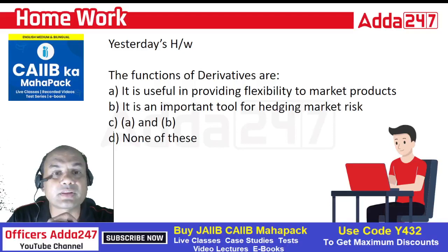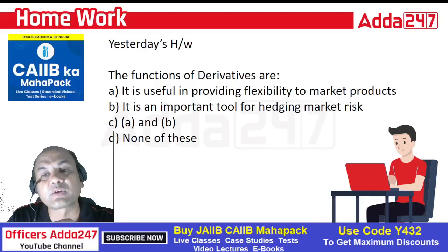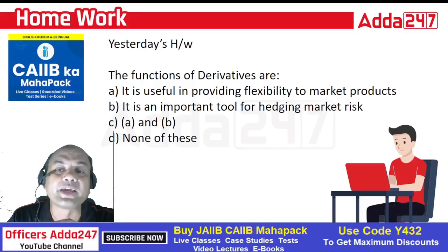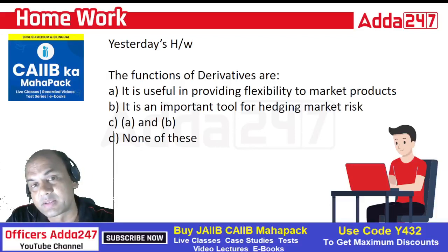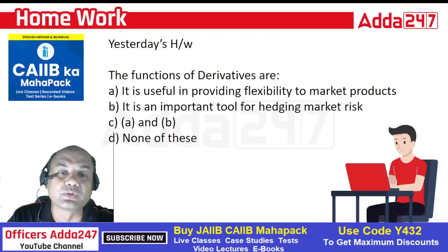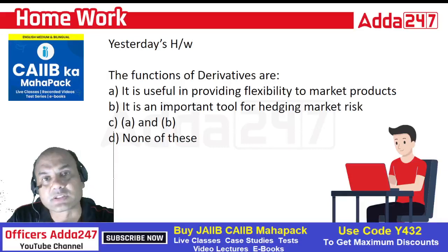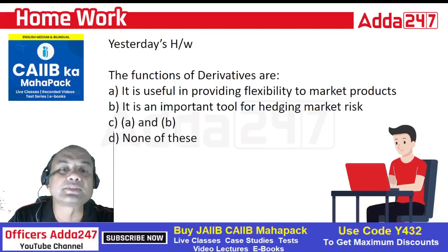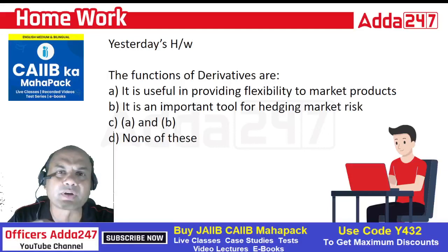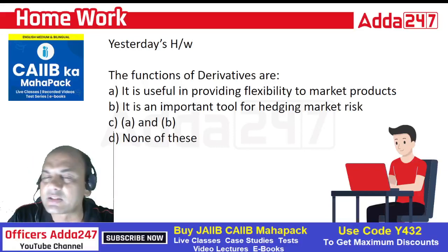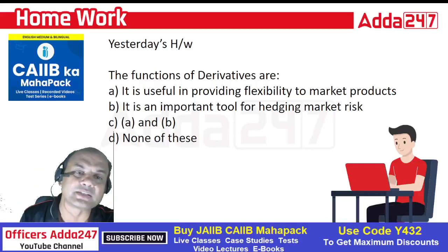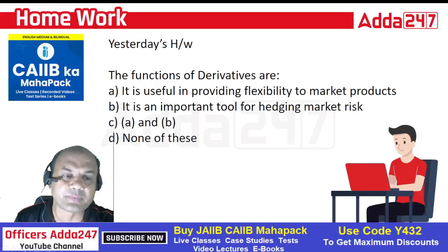Yesterday's homework was: what are the functions of derivatives? Derivatives are used for providing flexibility to market products, and also as an important tool for hedging. Flexibility means if you have hedging tools or derivatives, you can take more difficult calls. Hedging is important in any commodity trading — dollar, gold, stocks, anything. So both A and B are correct; the answer is C.